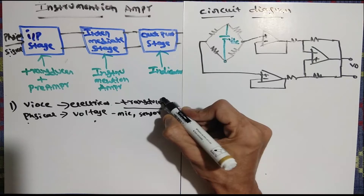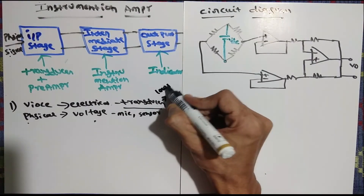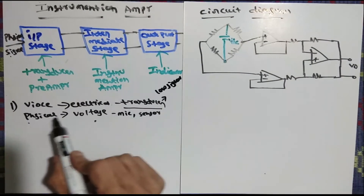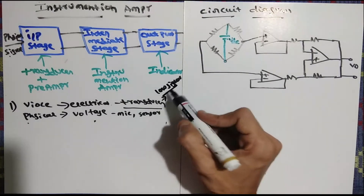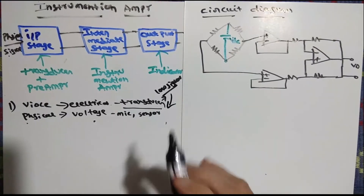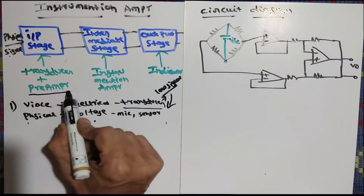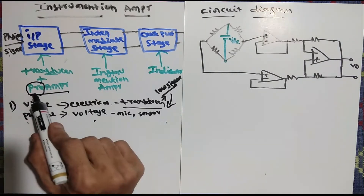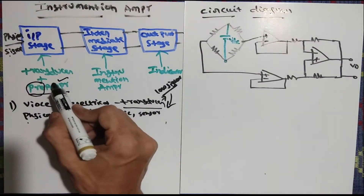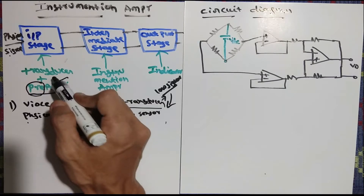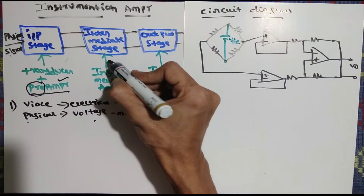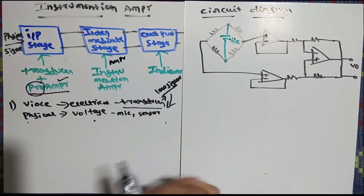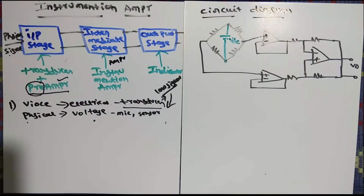The problem is that the signal you get from physical-to-electrical conversion is very, very low. This low signal from one stage cannot be processed adequately. So we add a pre-amplifier — 'pre' means before processing, we do one small amplification stage. In the instrumentation amplifier we then perform the real amplification processing.